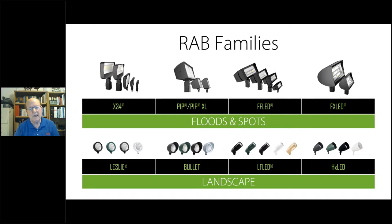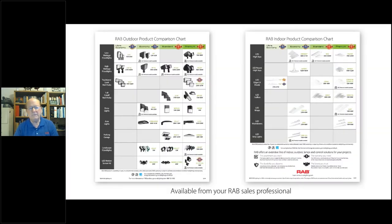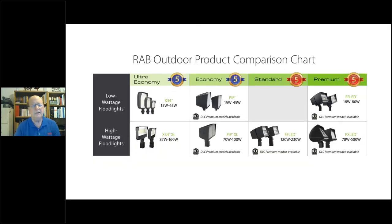We're going to talk about eight different products: four fall into floods and spots, and four into landscape. Looking at the outdoor guide, products are broken up into ultra economy, economy, standard, and premium. The idea is to save time and be efficient — if you know your budget and project characteristics, you can see what's offered. We have high wattage as well as low wattage options, and we're going to cover this in detail today.